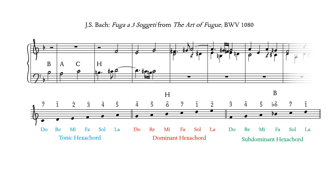The Bach motif makes for an irregular fugue subject in at least two ways. First, the subject begins on B-flat, which is scale degree 6 in D minor — the key of this example. All of the fugue subjects we looked at in the previous video on subjects and answers only began on either scale degree 1 or 5.